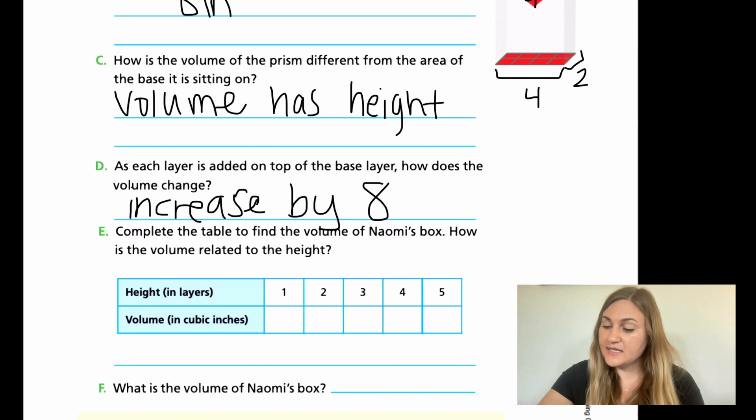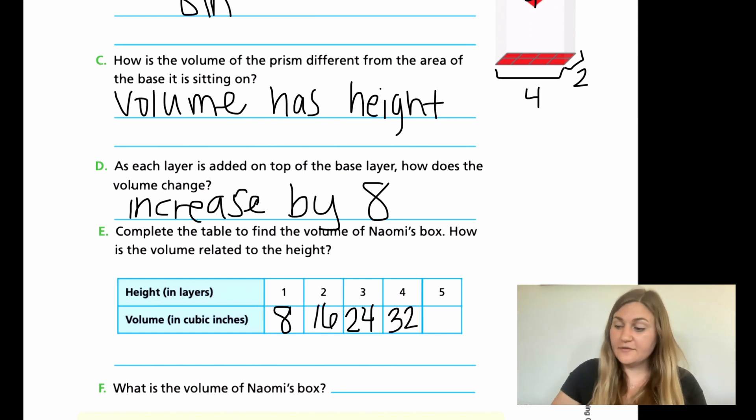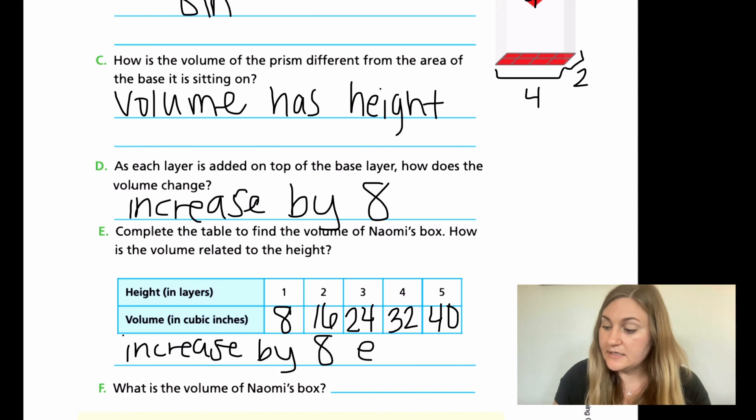Let's come back and solve these last two. For E, we know in one layer, there are 8. In the second layer, there's going to be another 8. So 8 plus 8 or 8 times 2 is 16. Now, instead of keeping doing a repeated addition, what's easier is just to go ahead and multiply. So 8 times 3, I know is 24. 8 times 4 is 32. And 8 times 5 is 40. How is the volume related to the height? Well, it increases by 8 each time, which is very similar to D. So I'm going to put the same thing: increase by 8 each layer.